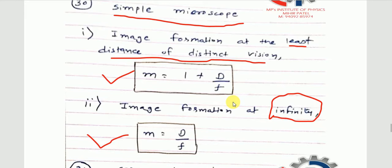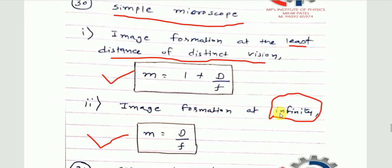The first formula: where is image formation considered? At the least distance of distinct vision. In that case, magnification m = 1 + D/f. But when image is at infinity, the '1 plus' is not there — it simply becomes D/f. Do you remember that?